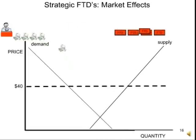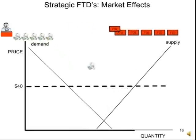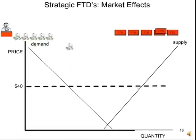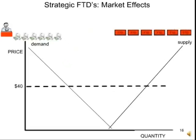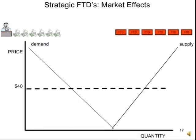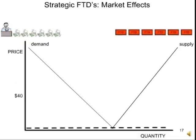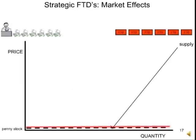Eventually, he shifts the supply line far to the right. Now notice where the supply and demand lines cross. The price collapses. The $40 stock turns into a penny stock. Most investors think penny stocks are the Wild West — they stay away, so demand dries up. As demand dries up, a ceiling forms over the stock.